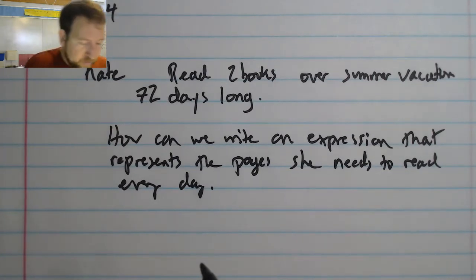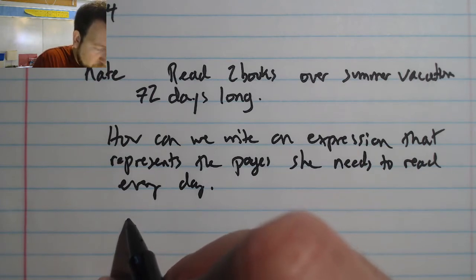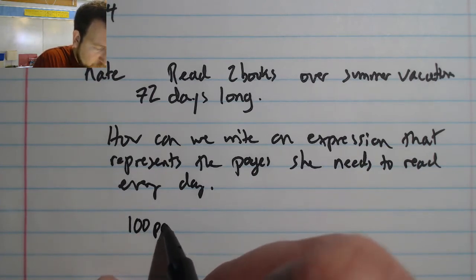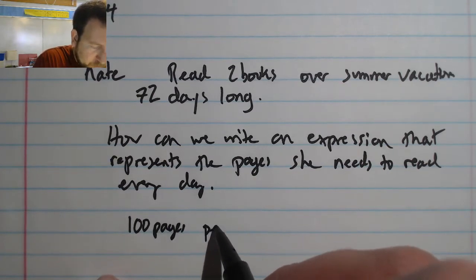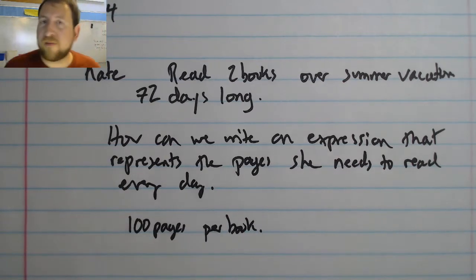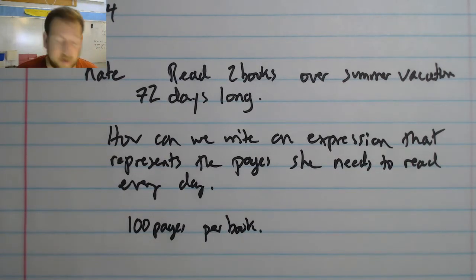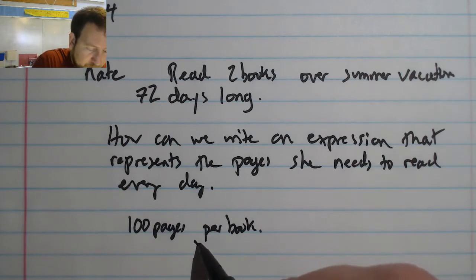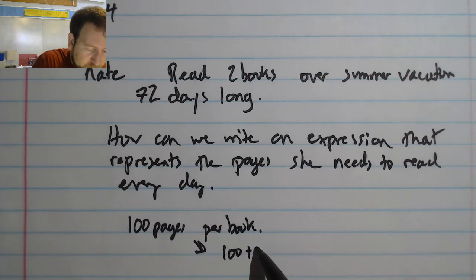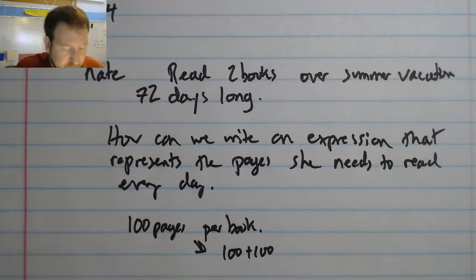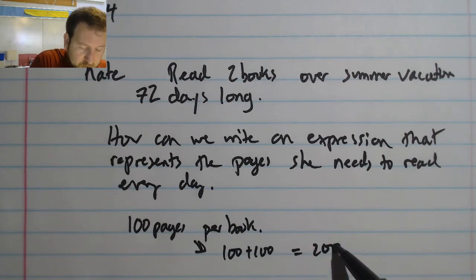For example, say there was 100 pages per book. If I just wanted to find out the pages that she needed to read per day, I could just add 100 + 100 for the two books, which would give me 200 total pages.